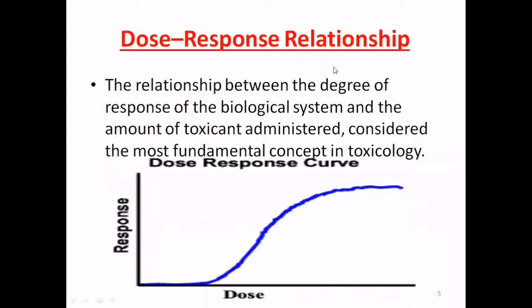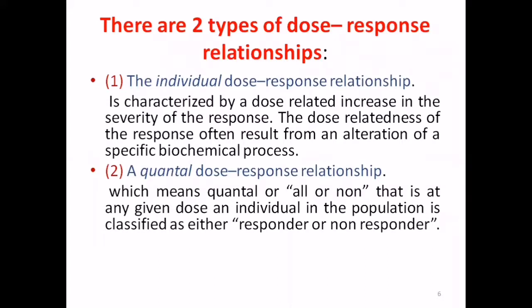The dose-response relationship is the degree of response of a biological system to the amount of toxicant administered. It is considered the most fundamental concept in toxicology. There are two types: number one, the individual dose-response relationship, which is characterized by a dose-related increase in the severity of the response.